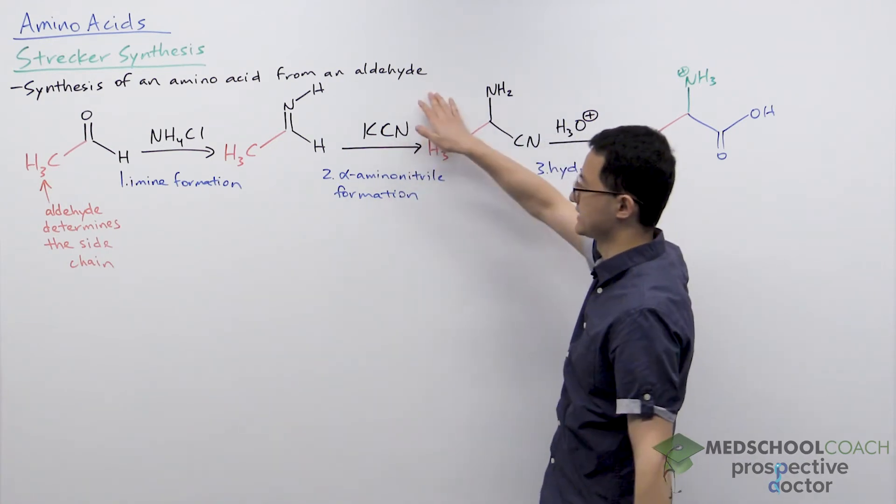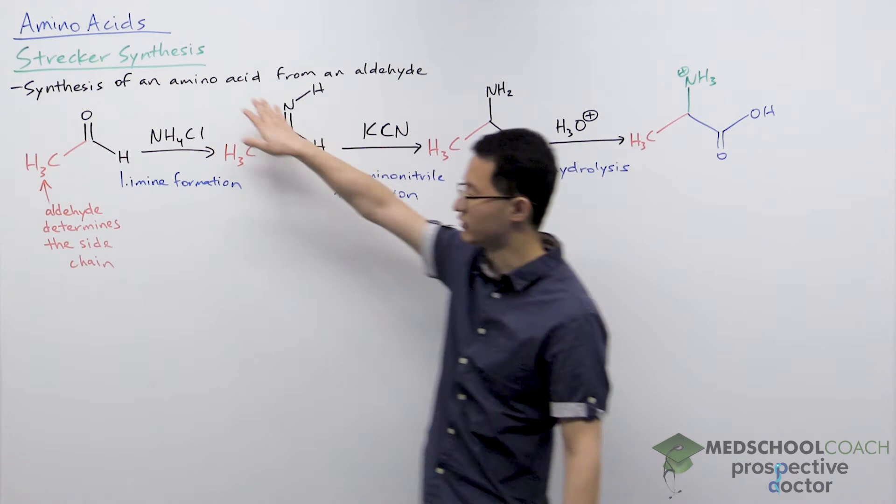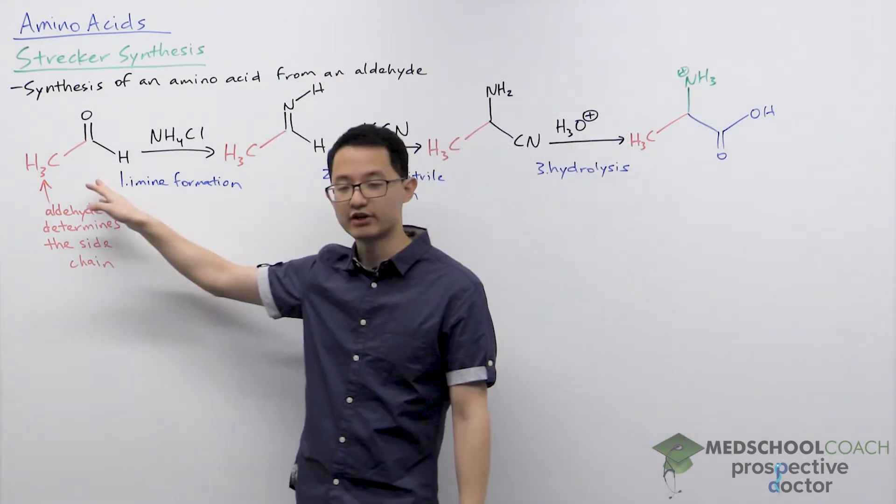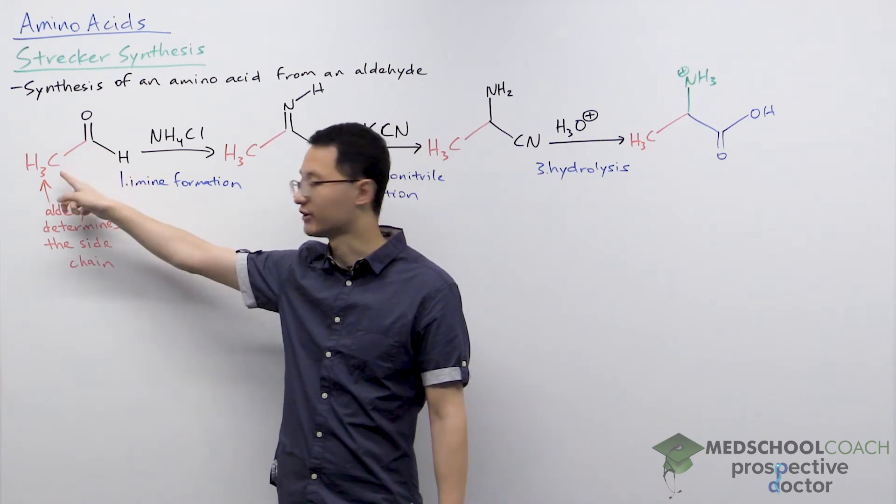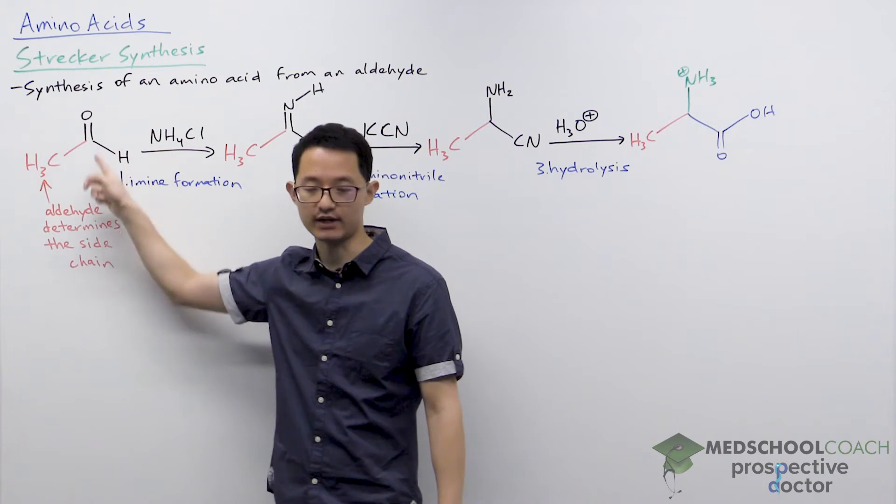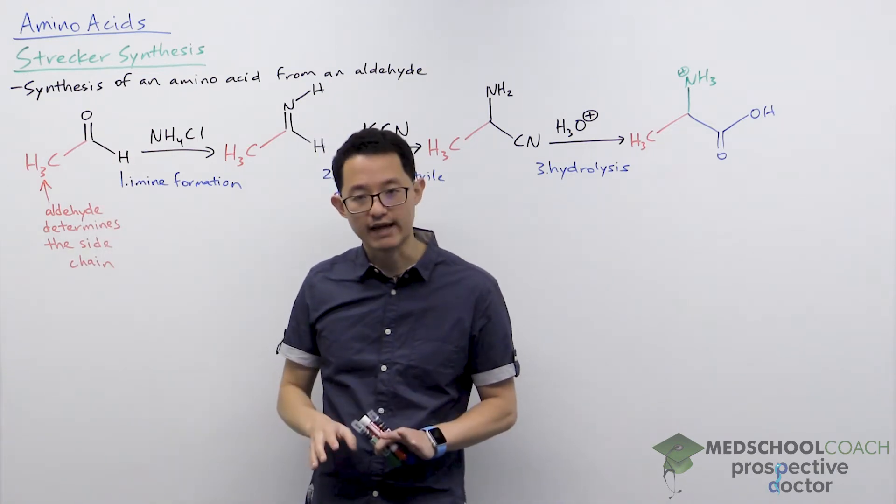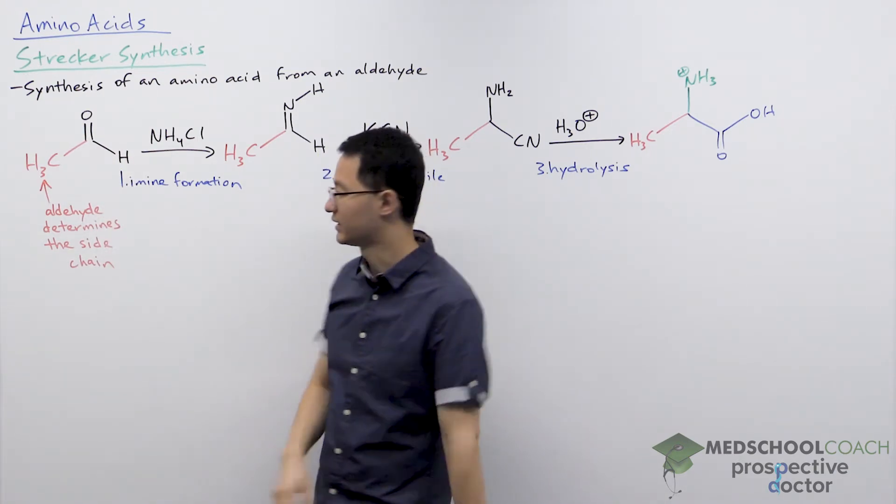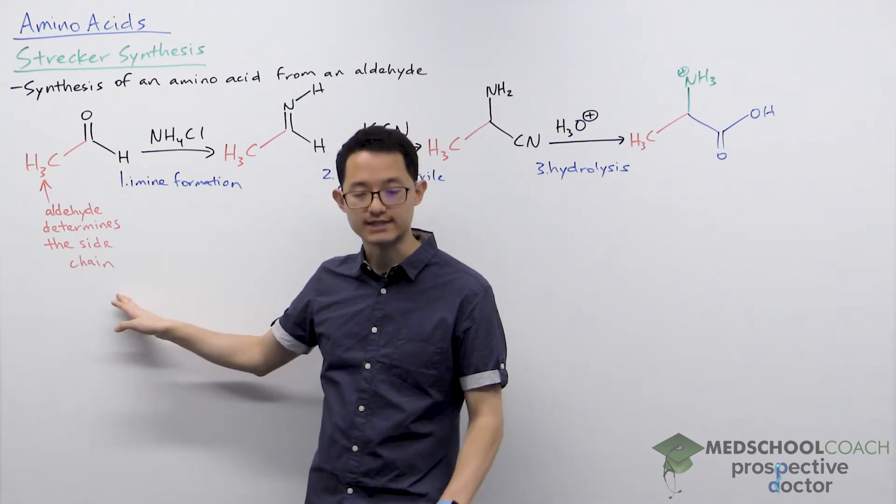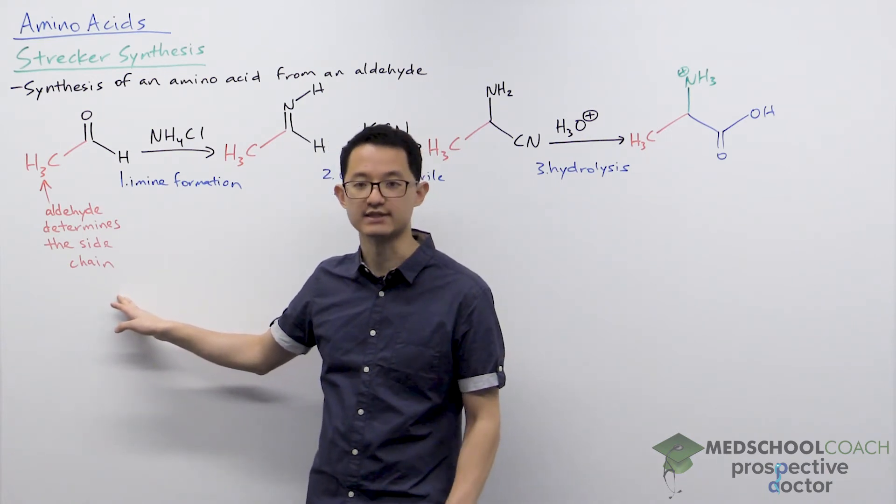Strecker synthesis is a way of making amino acids from an aldehyde. You can see here we're starting with an aldehyde where we have the carbonyl, and on one side we have an R group, the other side we have a hydrogen. Now the choice of the aldehyde is very important because the aldehyde that you choose is going to determine what the side chain of your amino acid is going to be.